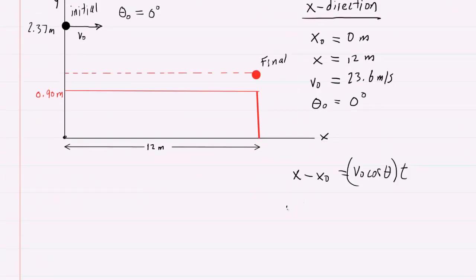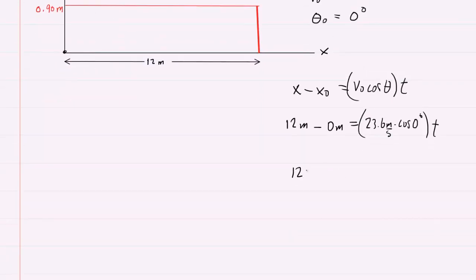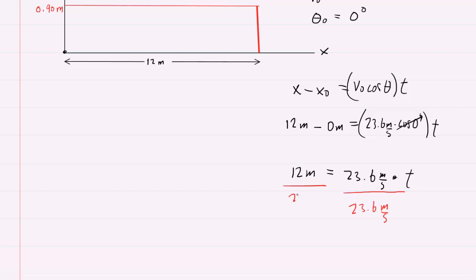The final x-coordinate is 12 meters and the initial was 0, so the left side is 12 meters. We have 23.6 meters per second times cosine of 0 degrees times time. Since cosine of 0 is 1, the right side simplifies to 23.6 meters per second times time. Dividing both sides by 23.6 meters per second gives us 12 divided by 23.6, which equals 0.508 seconds. That's the time it takes to reach the final position.